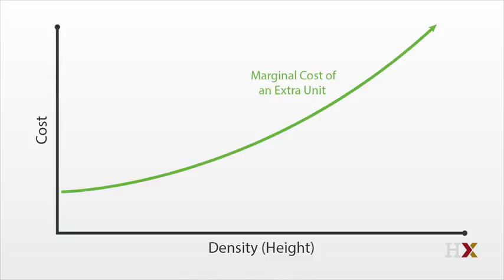Technically, this curve reflects the marginal cost of each unit, meaning how much the builder's total costs go up as they add one more unit.